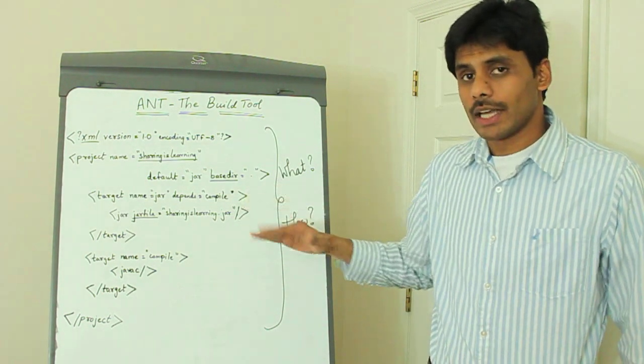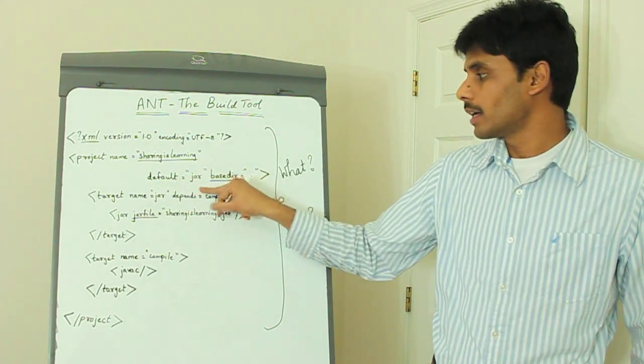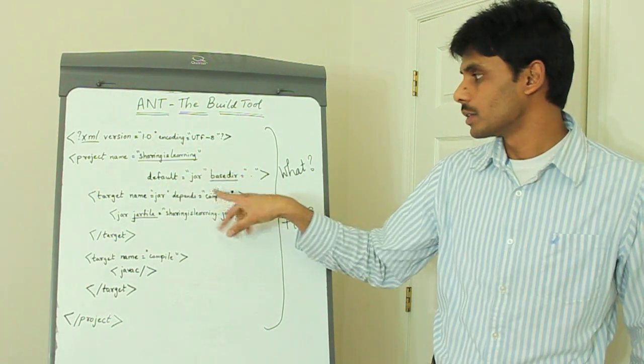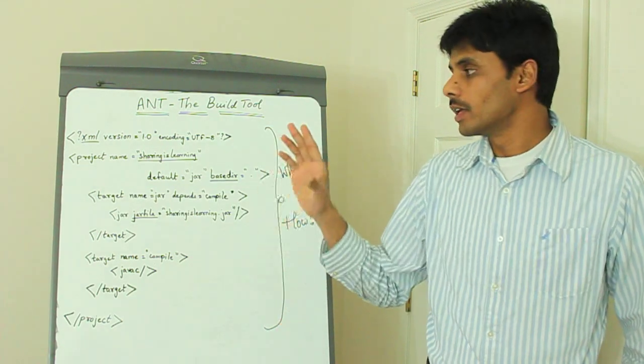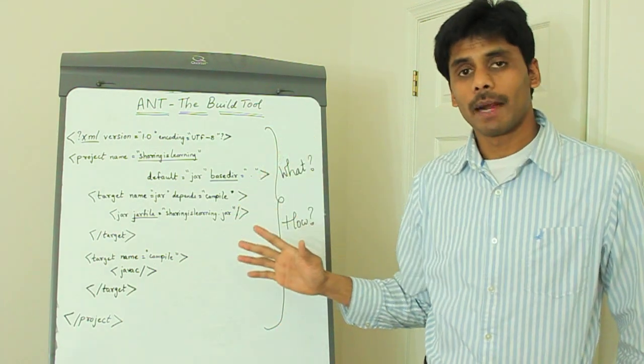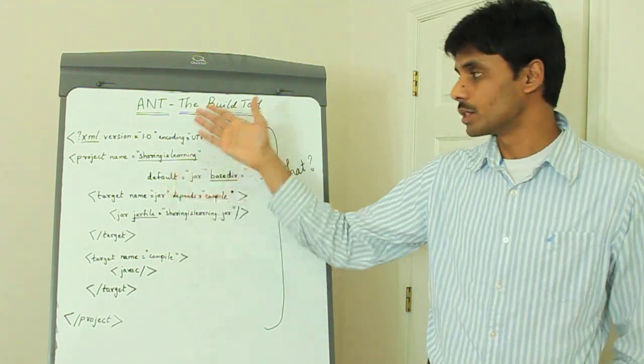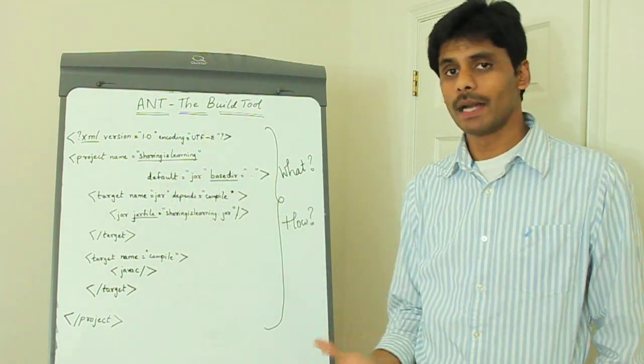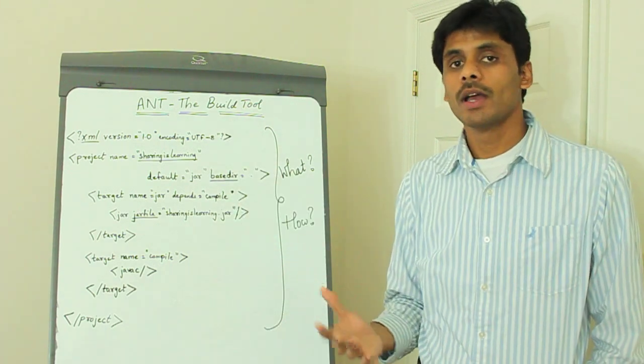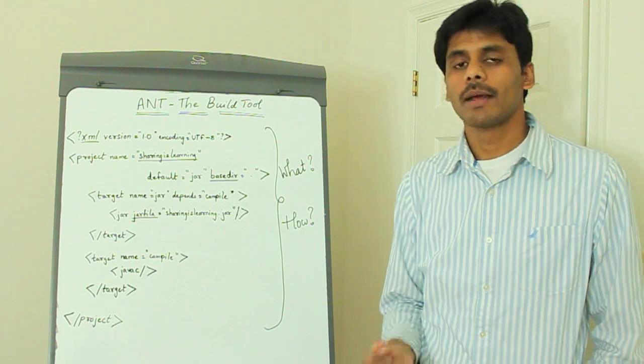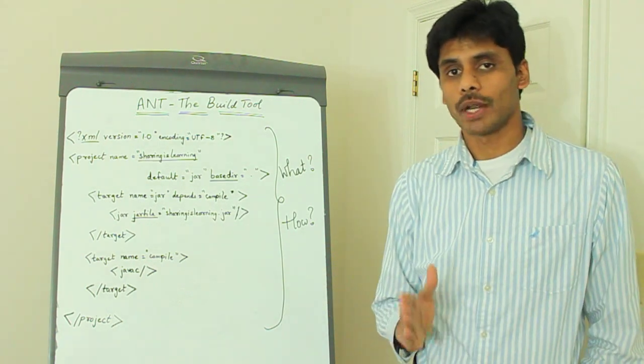That's how we link each of these targets. And we can always have a default target, which in this case is jar. So once you install Ant and you run Ant from the command prompt, you give the build file name, which by default Ant looks for build.xml. You can name your build.xml file whatever you want to, but by default Ant looks for build.xml file in any directory in which you run Ant.